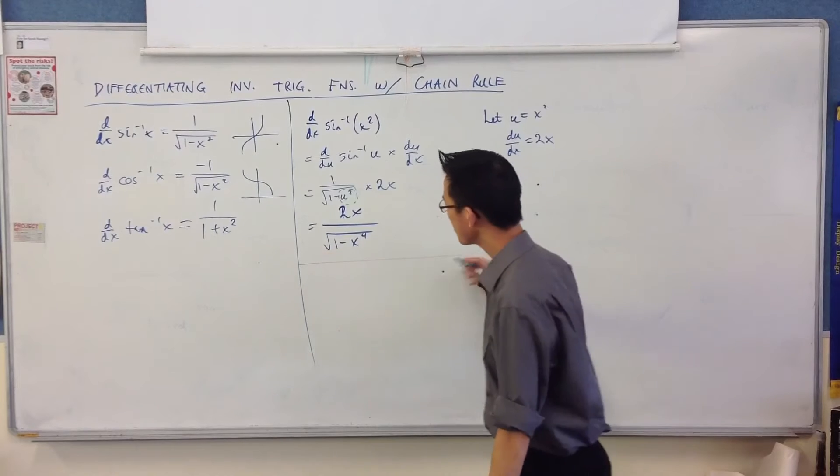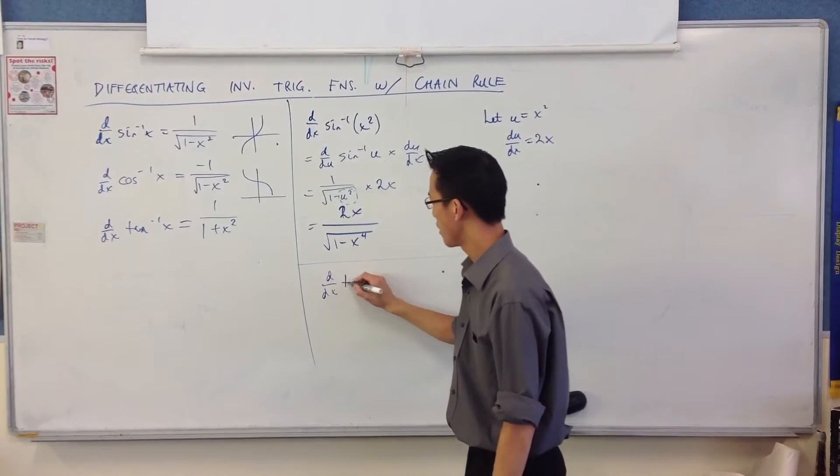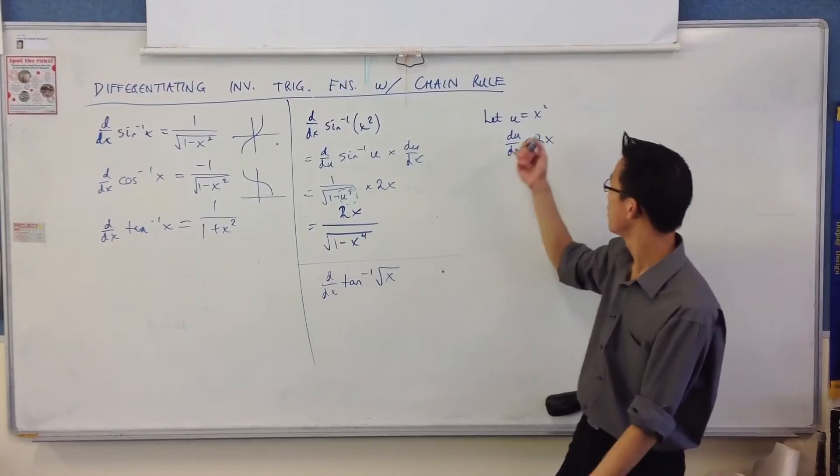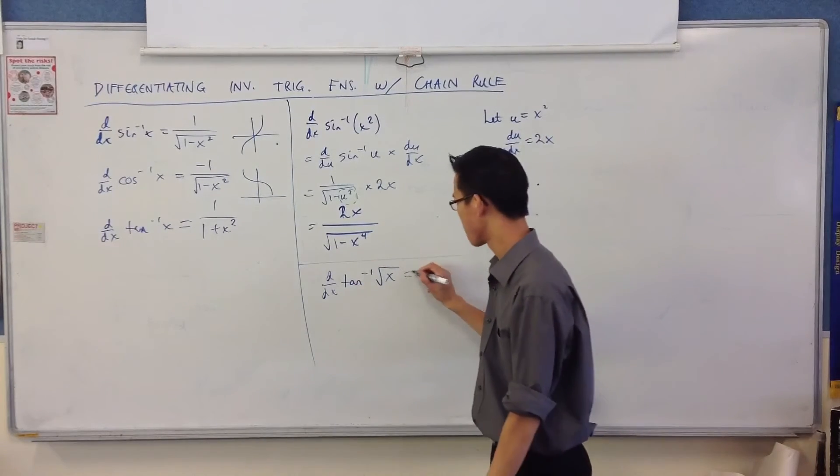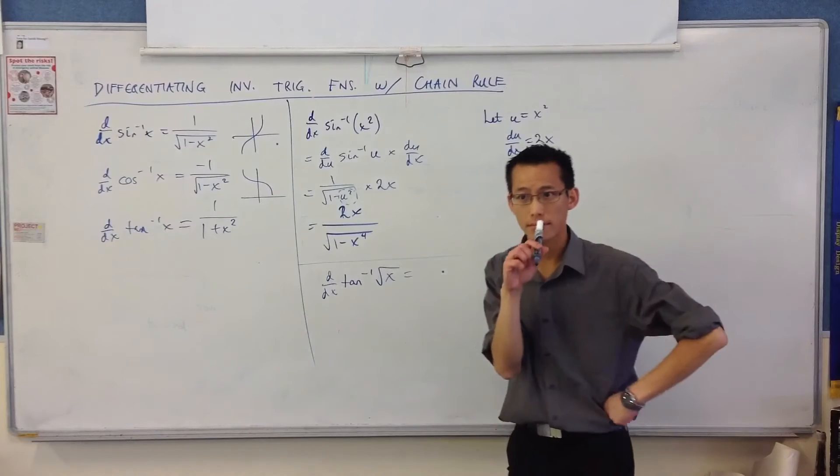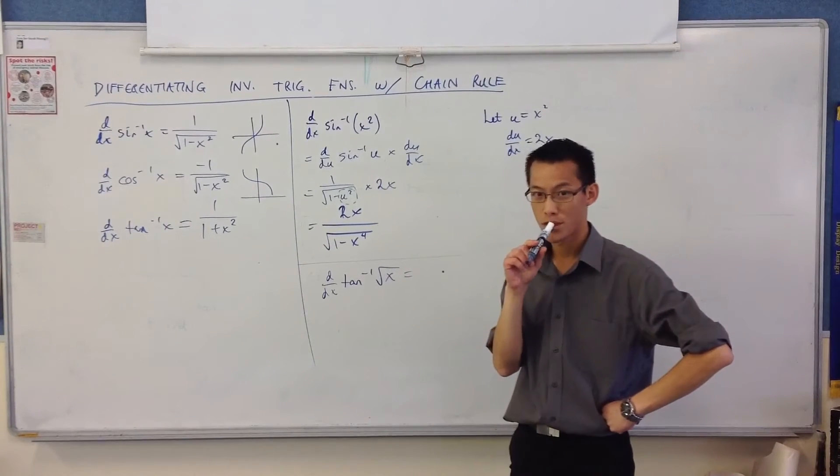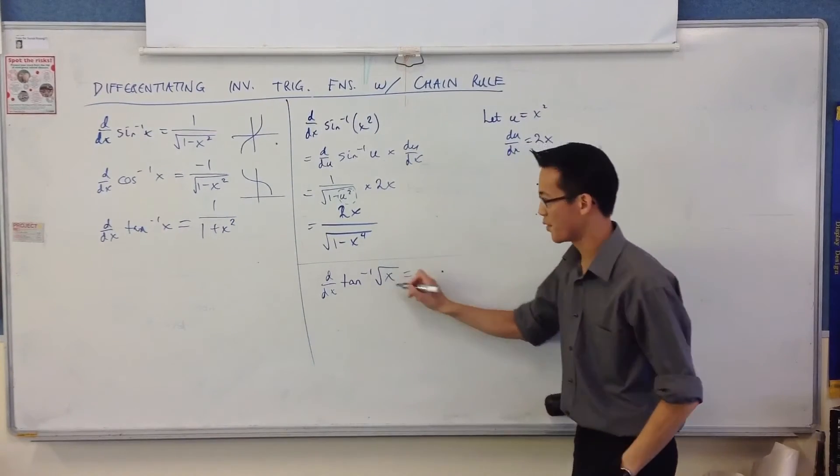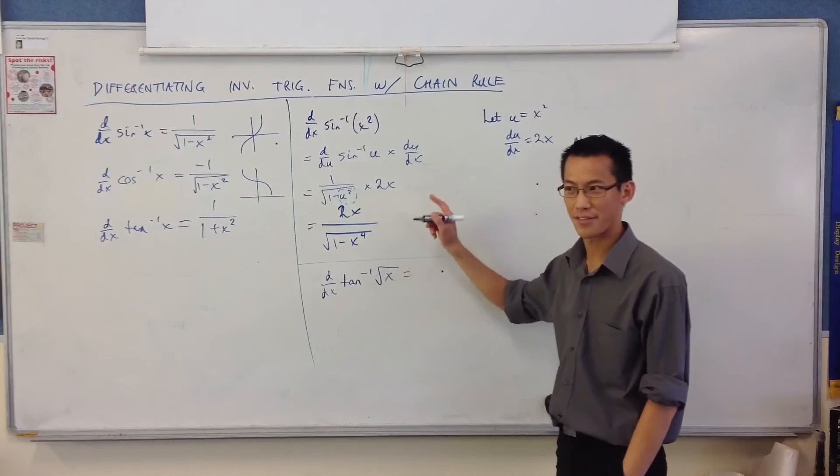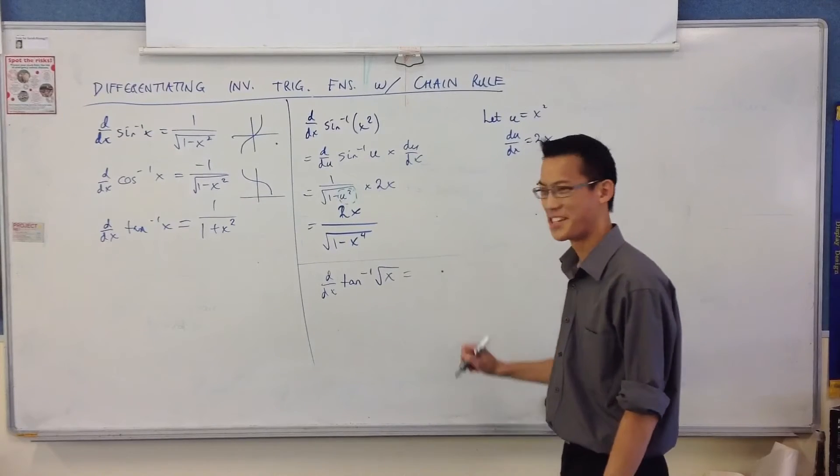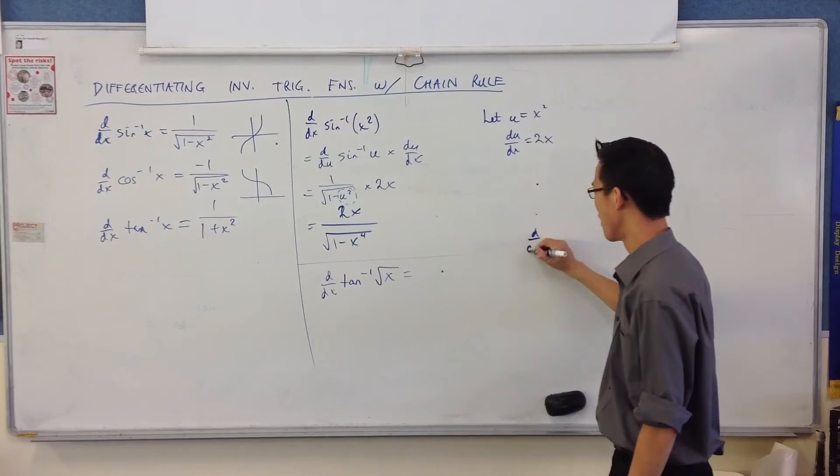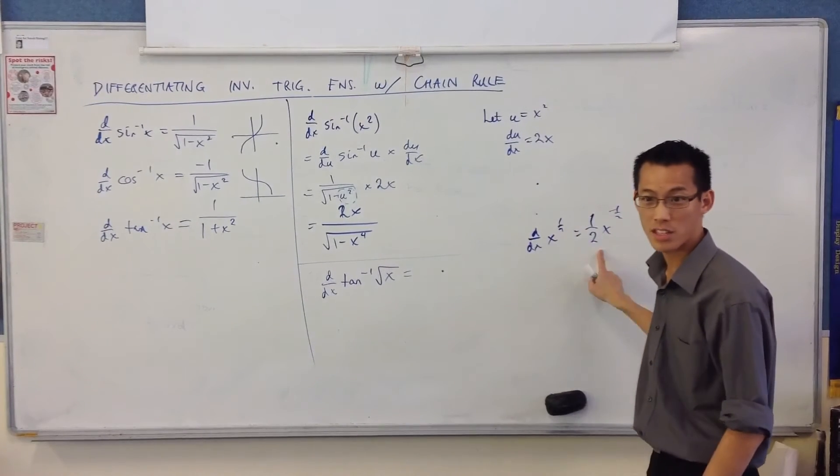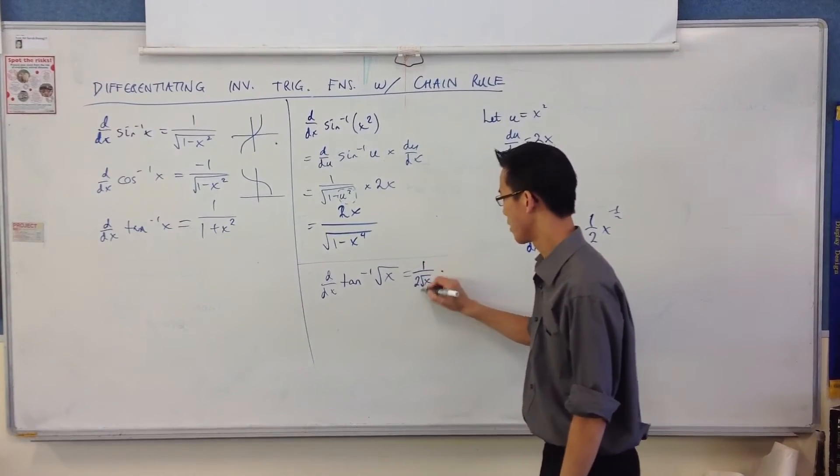All right, let's do another quick one. How about the derivative of tan inverse of the square root of x? Okay, let's see if we can do it this time without writing it out full form. What's the first thing you would write down? Should we do the inside or the outside? It doesn't really matter which one we do first. Let's do the inside, shall we? What's the derivative of the square root of x?